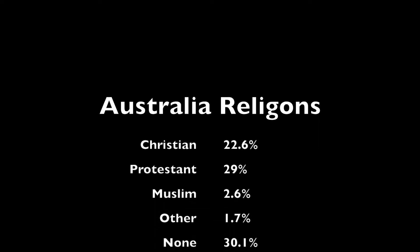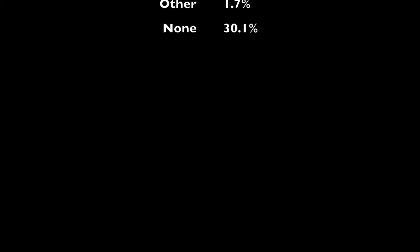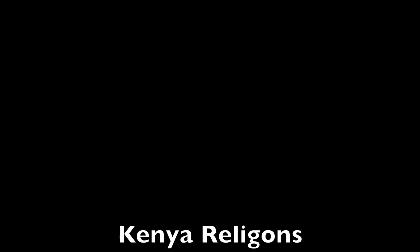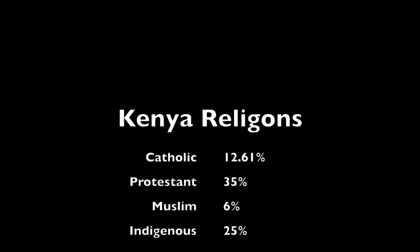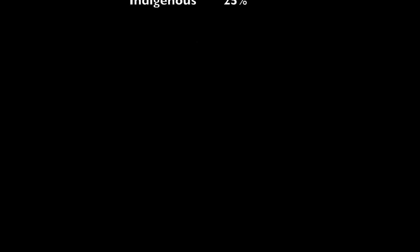Next, let's take a look at the different types of religions. Australia has many religions but some predominant ones: Christian, Protestant, Muslim, and some other smaller ones or none — about 30% as you can see in this slide. Kenya predominantly has fewer religions: Catholic, Protestant, Muslim, and indigenous. Indigenous refers to local beliefs — maybe ancestral worship or believing in witchcraft.